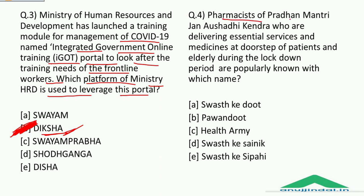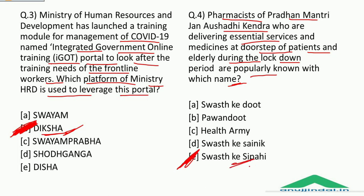Quiz question 4: Pharmacists of Pradhan Mantri Jan Aushadhi Kendra who are delivering essential services and medicines at the doorstep of patients and elderly during the lockdown period are popularly known as Option E — Swasth ke Sipahi.